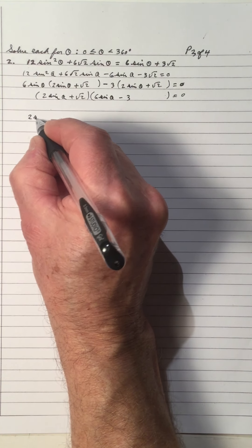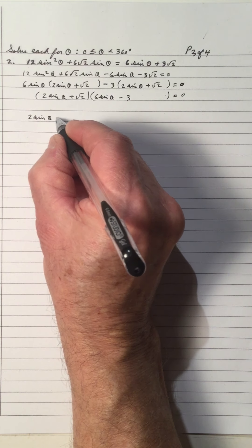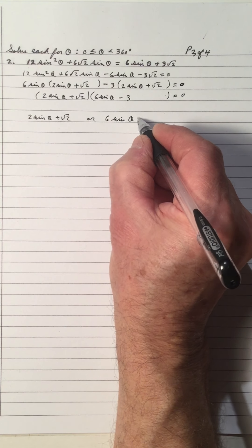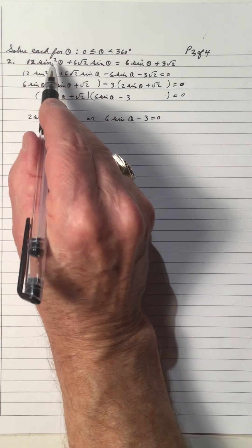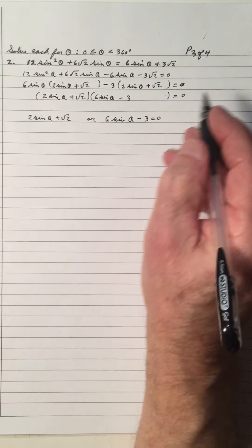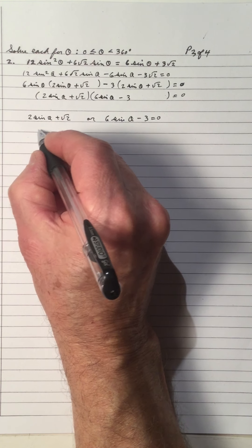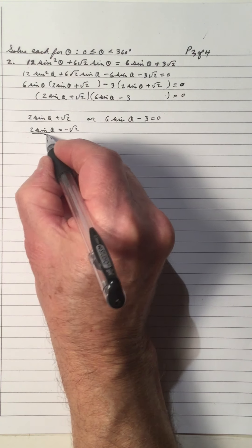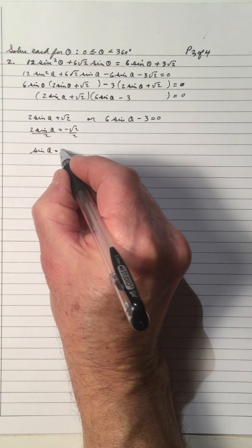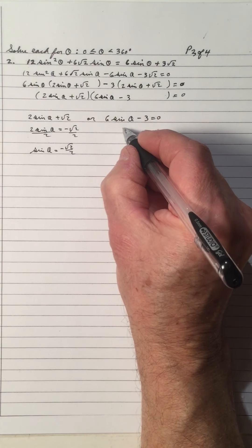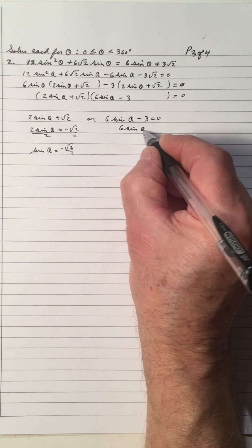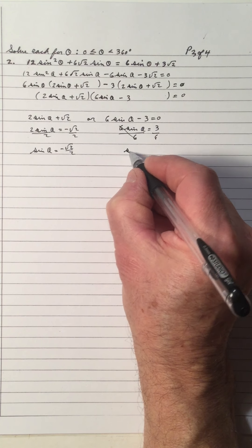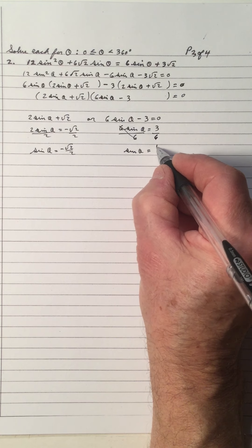We let each of those factors equal to zero — it's a quadratic with two sets of factors. Solving the first factor: two sine theta equals negative root two, divide by two, so sine theta equals negative root two over two. And for the second factor: six sine theta equals three, divide by six, so sine theta equals one half.